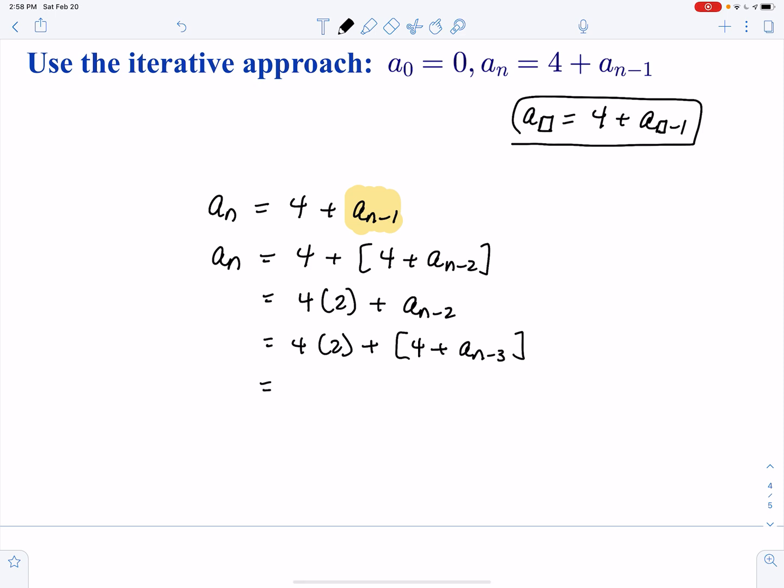So as you can tell, we're going to pick up another 4 and add a sub n minus 3. So it seems as though whatever I'm subtracting here is whatever I'm multiplying here. So I'm going to fast forward to the nth turn, which is going to give me 4 times n plus a sub n minus n. Now why am I doing that? I know what a 0 is. So this is 4 n plus a 0, which is 4 n.